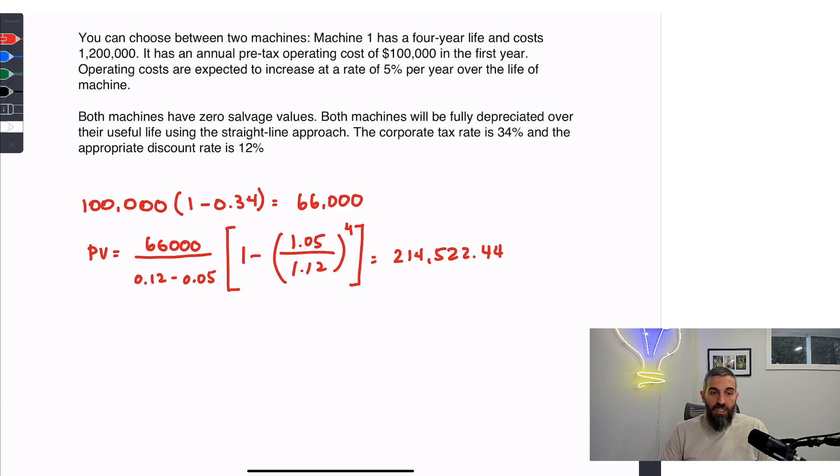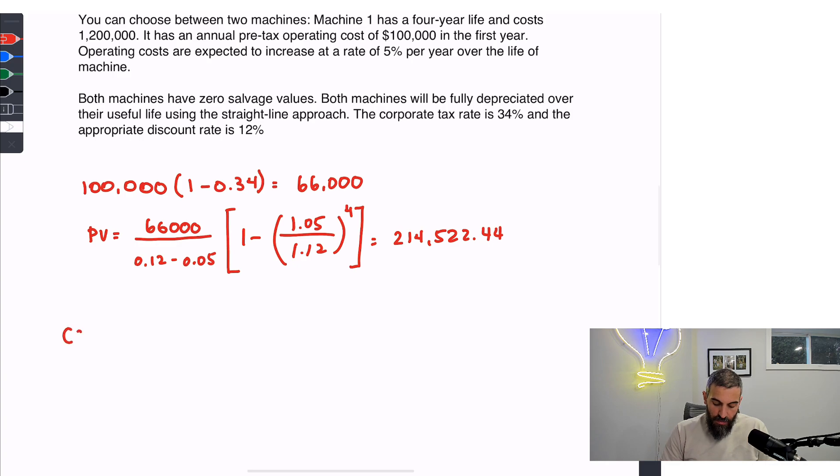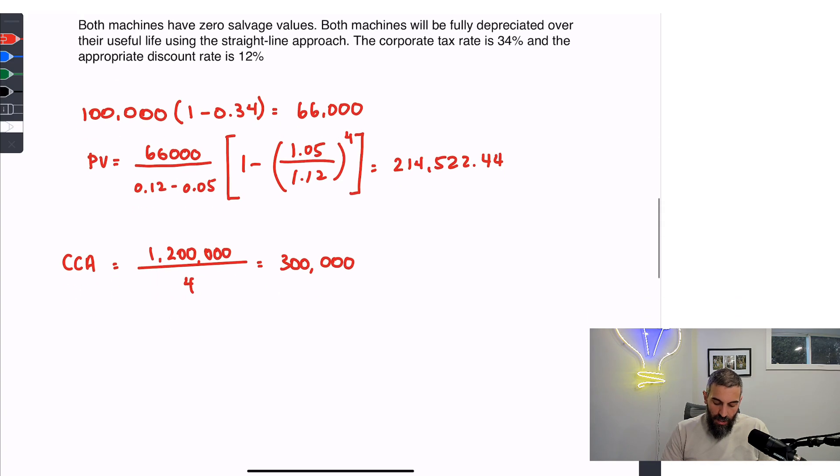Next, it says that the machine will be fully depreciated over the four-year useful life and has no salvage value. So for the CCA, the depreciation, I'm going to take the $1.2 million and just divide it by the four-year useful life, which is $300,000 per year. To find the tax shield, the tax shield is the amount of tax we save each year because of the depreciation. You simply have to take that depreciation and multiply it by the tax rate. So $300,000 multiplied by 34% is $102,000. So each year, we are going to save $102,000.